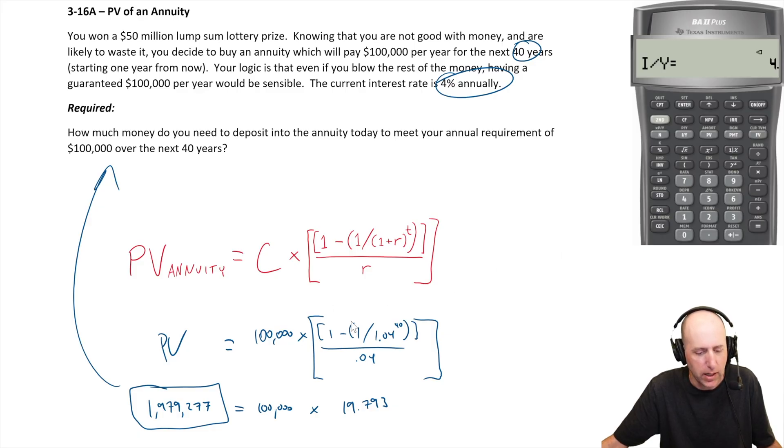My PMT is how much we're going to be receiving on a regular basis. $100,000 is the PMT. And the future value will be zero. We're dripping this thing down to zero. So let's compute the present value. And you can see there, negative 1979277.